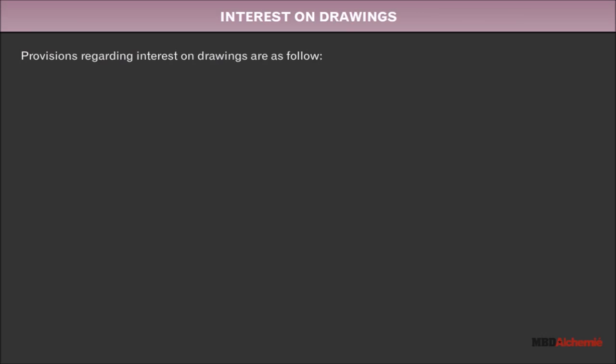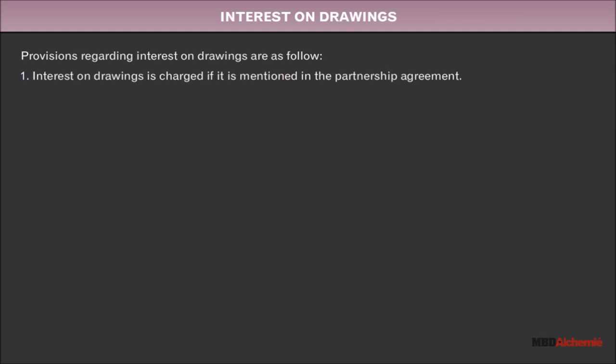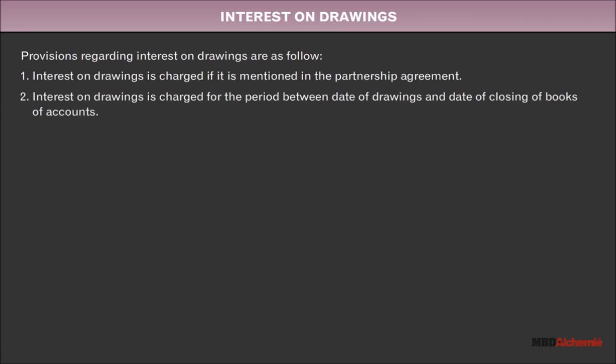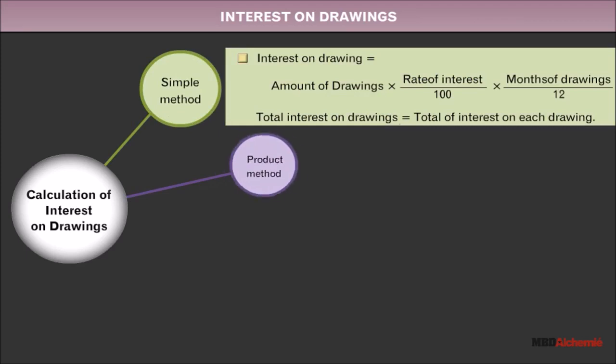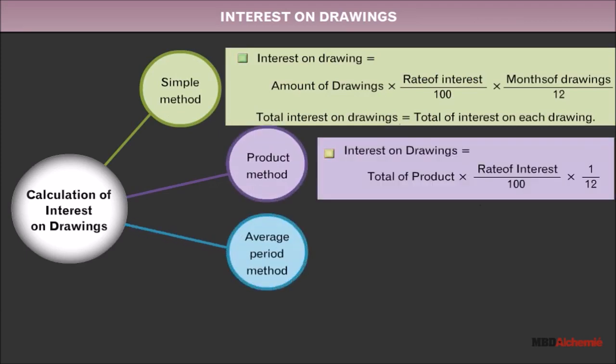Interest on drawings: Provisions regarding interest on drawings are as follows. Interest on drawings is charged if it is mentioned in the partnership agreement. It is charged for the period between the date of drawings and the date of closing of books of accounts. The rate of interest on drawings will be as per the partnership agreement. There are three methods of calculating interest on drawings: simple method, product method, and average period method.